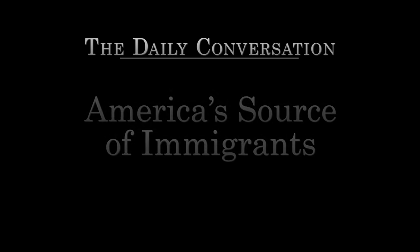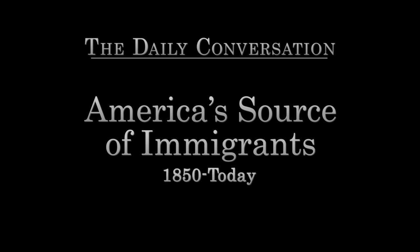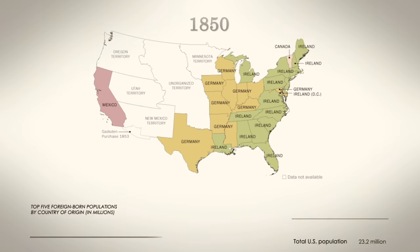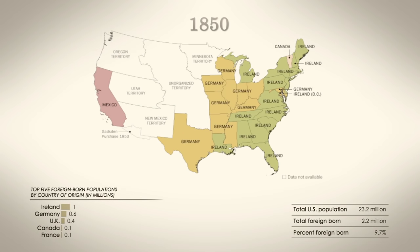This is a state-by-state look at how immigration to America has changed over time. In 1850, the vast majority of newcomers were from Ireland and Germany.